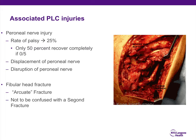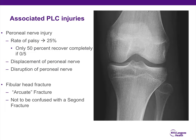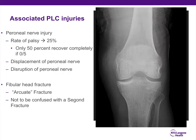Peroneal nerve injuries can range from displacement to complete disruption of the nerve. We also sometimes see fibular head fractures called arcuate fractures, where the ligaments and capsule pull a fleck of bone off the fibular head. This should not be confused with a Segond fracture. The arcuate fracture appears as a small, horizontally-oriented fracture just off the fibular head, displaced by about 2 centimeters — classic for an arcuate injury. A Segond fracture, by contrast, is more vertically oriented, with less displacement, and is more pathognomonic of an ACL injury.